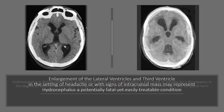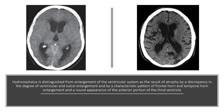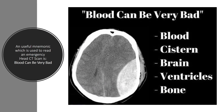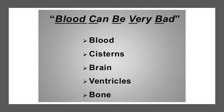Hydrocephalus is distinguished from enlargement of the ventricular system as the result of atrophy by a discrepancy in the degree of ventricular and sulcal enlargement, and by a characteristic pattern of frontal horn and temporal horn enlargement and rounded appearance of the anterior portion of the third ventricle. A useful mnemonic used to read an emergency head CT scan is: Blood Can Be Very Bad — B for Blood, C for Cisterns, B for Brain, V for Ventricles, and B for Bone.